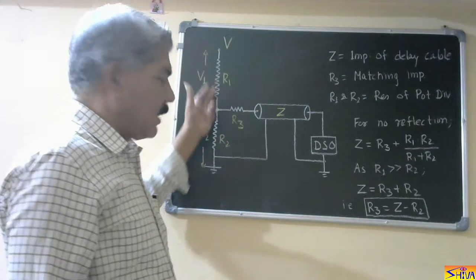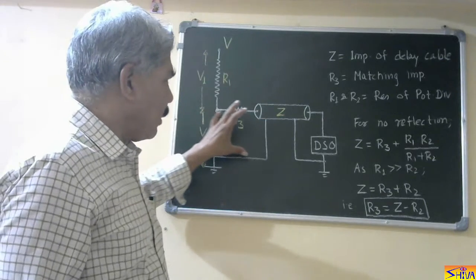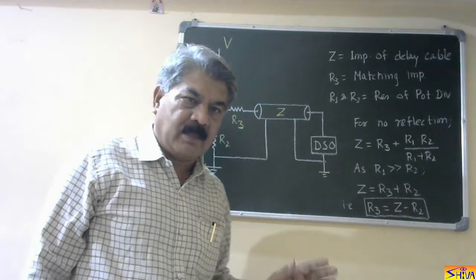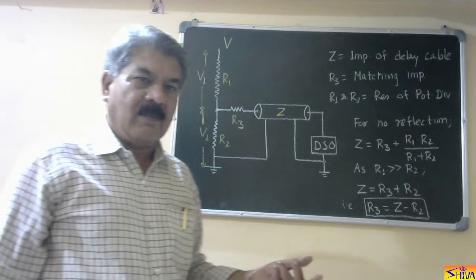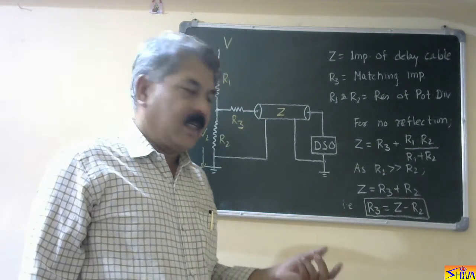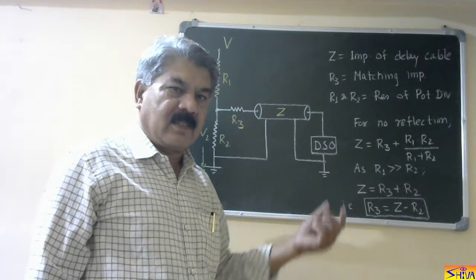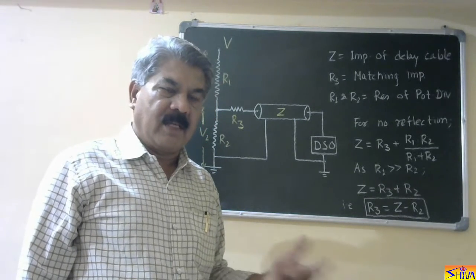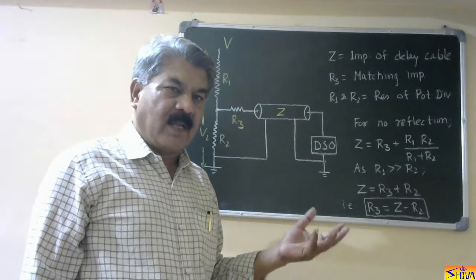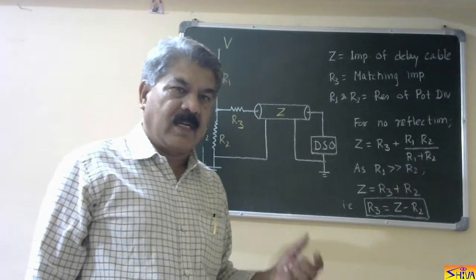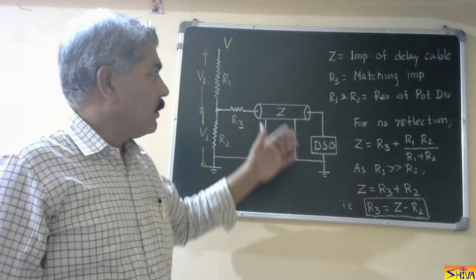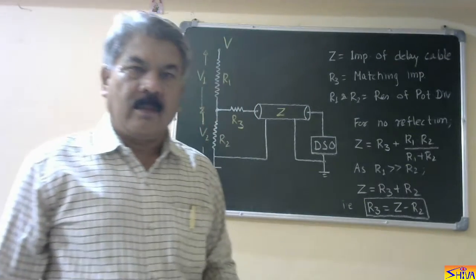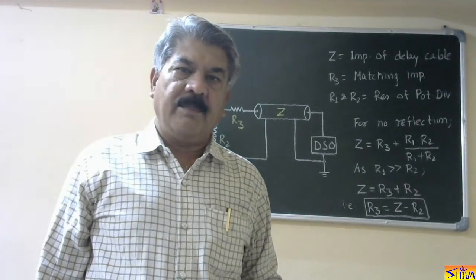Then whatever impulse voltage is coming, a sample of that will go to the digital storage oscilloscope, and the digital storage oscilloscope will record this impulse waveform. So if there is any flash over, spark over, or breakdown of the test object, the DSO will record that event also, and we can come to know the shape of the voltage wave. If there is no breakdown, and if there is flash over, we can note down the point of flash over on the chopped wave. So in this way, the impulse voltage is recorded. That is all about the measurement and recording of the impulse voltage wave.